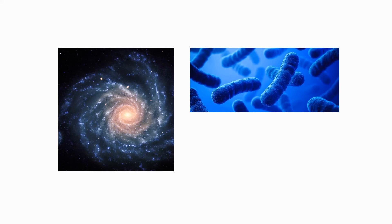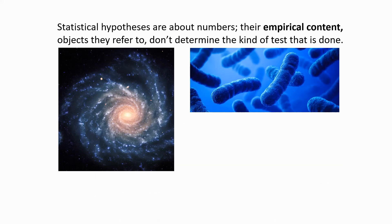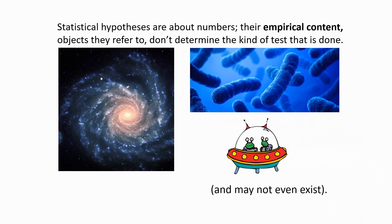We could contrast that situation with this one, where on the one hand, we could be looking at the numbers of stars in different galaxies or the number of bacteria in different human guts. Because statistical hypotheses are about numbers, their empirical content, the objects they refer to, don't determine the kind of test that is done, and the kinds of objects that could be studied may not even exist.